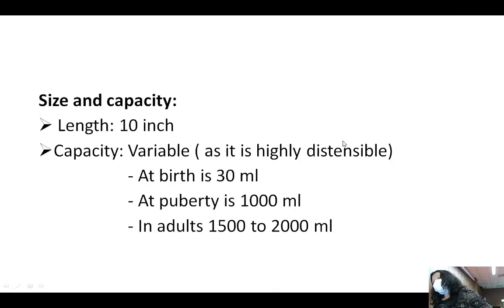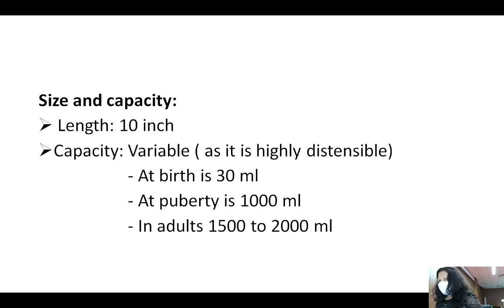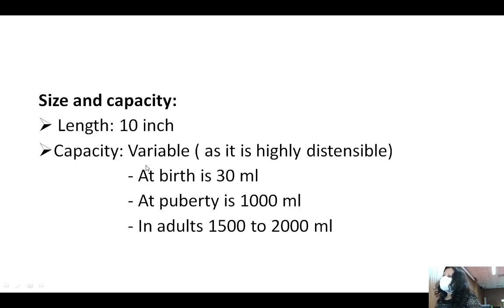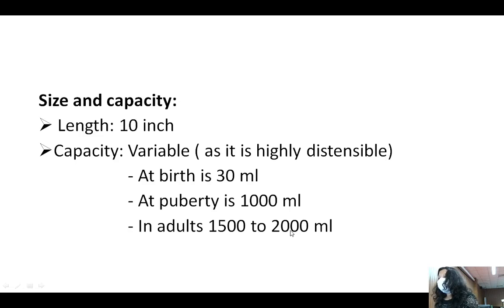The size and capacity: the length of the stomach is approximately 10 inches, which equals about 25 cm. The capacity of the stomach is variable as it is highly distensible. At birth, the capacity is 30 ml. At puberty it increases, and in adults it is approximately 1500 ml to 2000 ml, that is 1.5 to 2 liters.